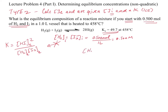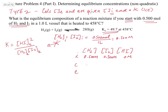Let's set up the ICE table. We have H2, I2, and HI with rows I, C, and E. We're starting with 0.500 molar for H2 and I2, and 0 molar for HI — that's because the reaction is set off with H2 and I2 with no HI present. For the change row: reactants go away, so minus X for H2 (stoichiometric coefficient 1) and minus X for I2. For HI it's plus 2X because of the stoichiometric coefficient 2. Equilibrium line: 0.500 molar minus X, 0.500 molar minus X, and 2X.